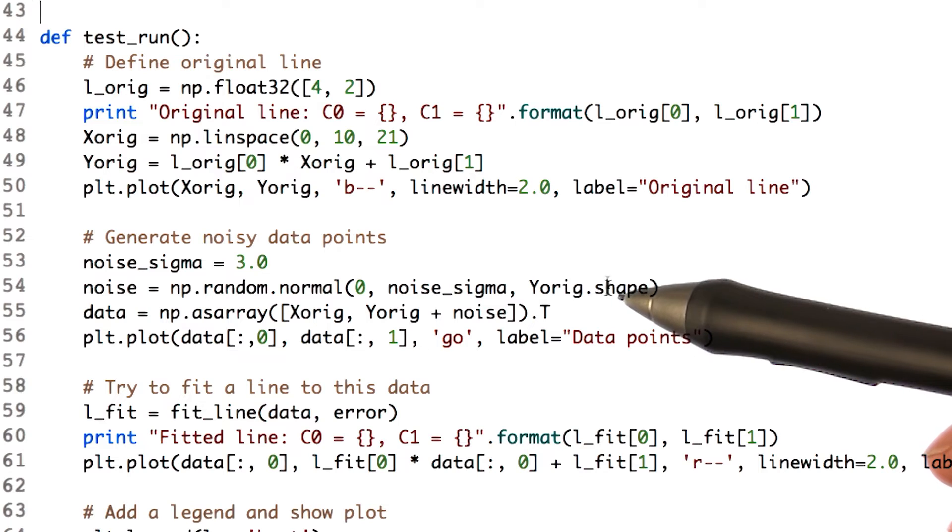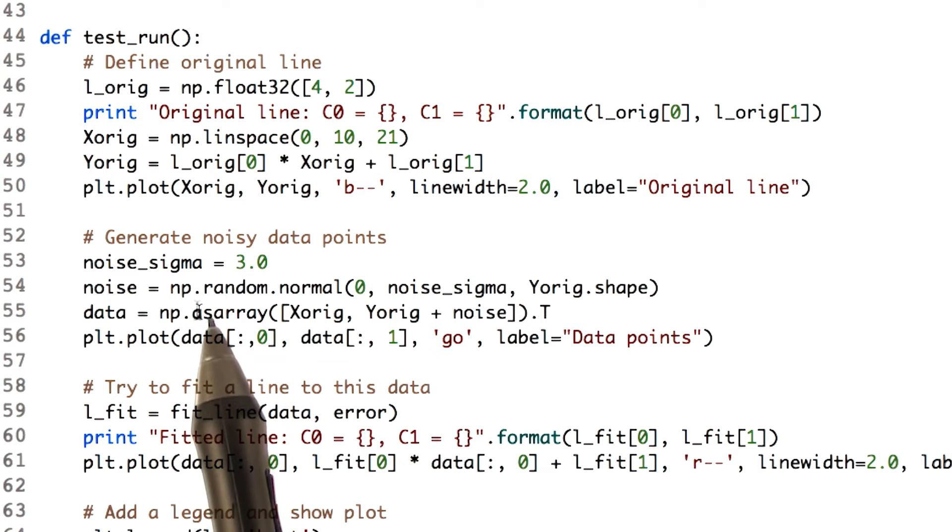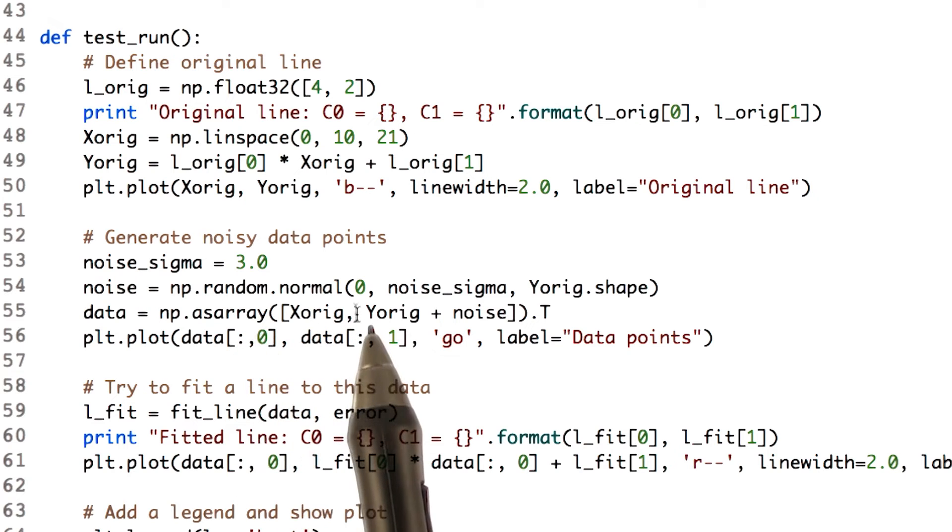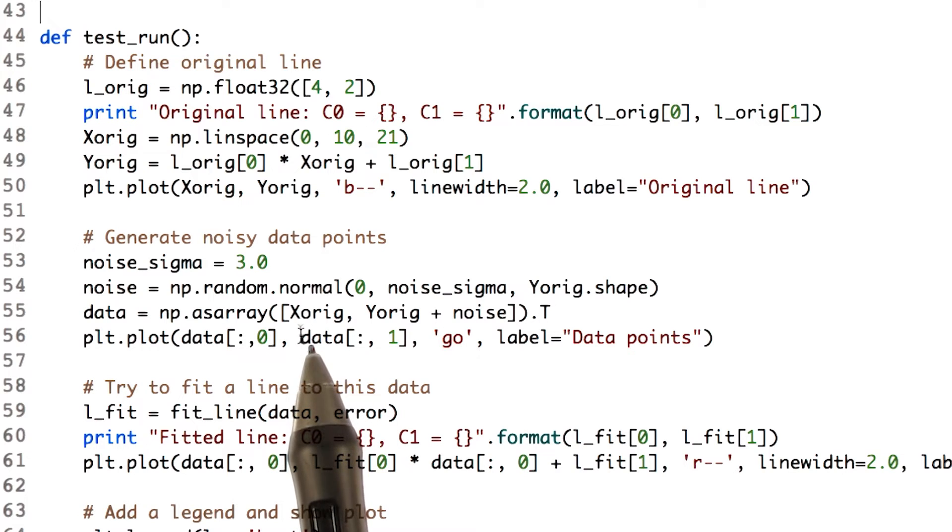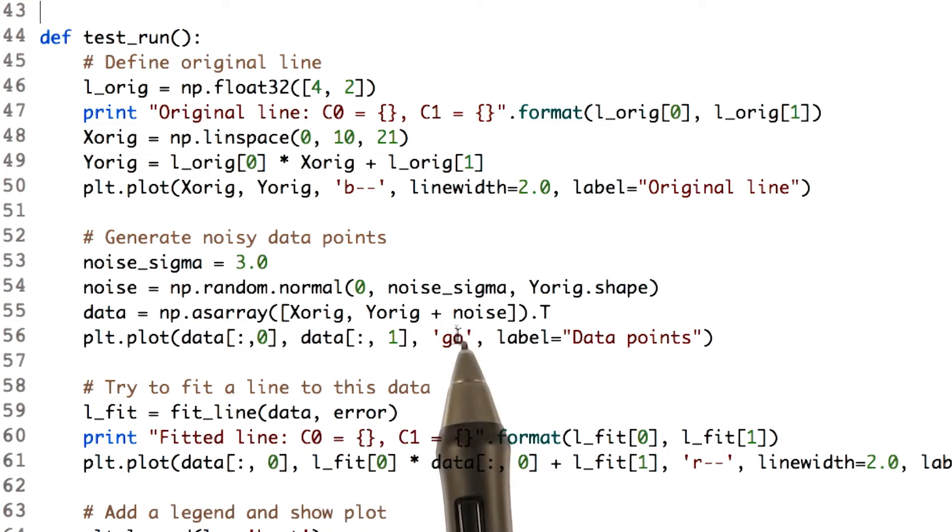We take that original line, and we use from numpy the random function to add some noise to it. So at each point along the x-axis where we have data, we add some noise. So now we've got our original line plus some noise.